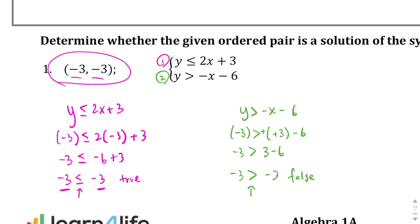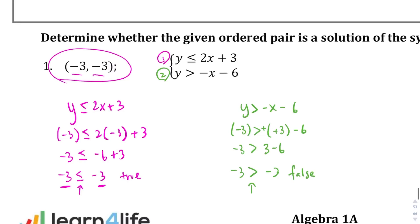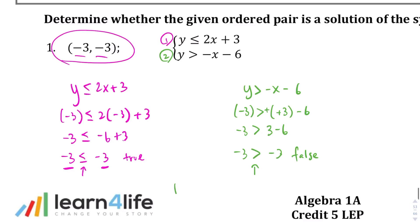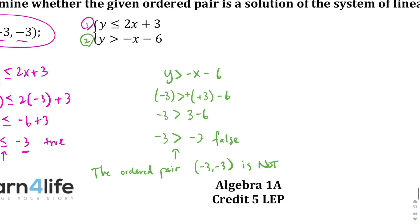Therefore, the ordered pair negative 3 comma negative 3 is not a solution to the system of inequalities.